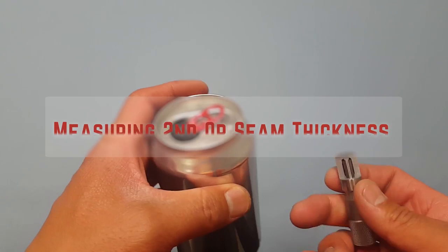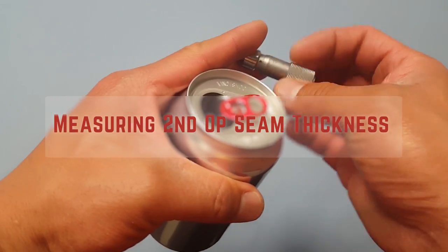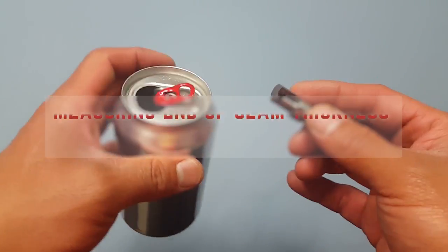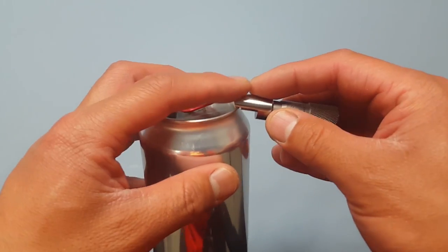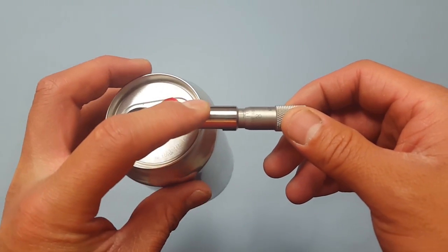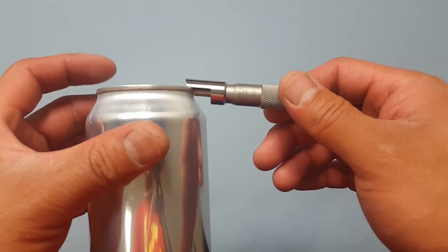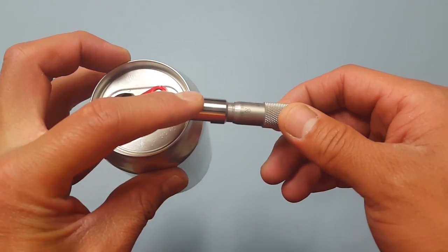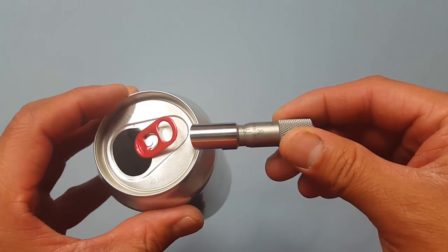Once you have done your first operation seam thickness, you can now move on to your final seam width measurement. Measure your can the exact same way you did in your first operation seam thickness by just attaching it at the right angle and the same pressure and mark down your measurement.